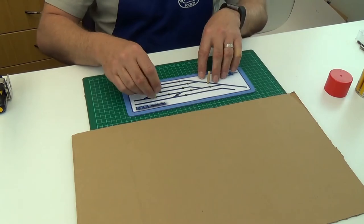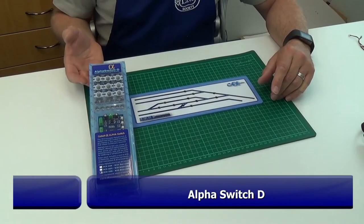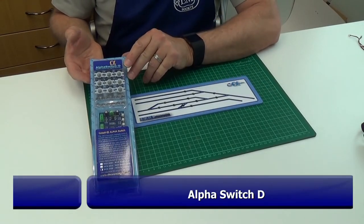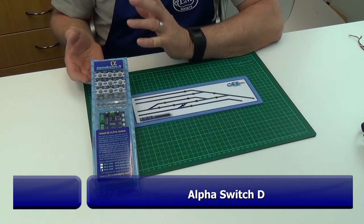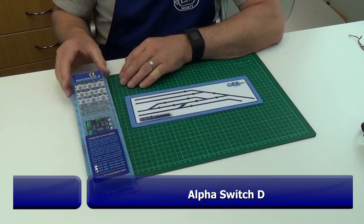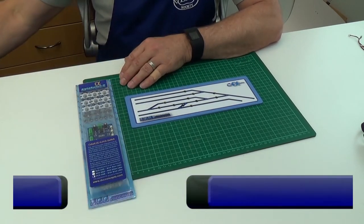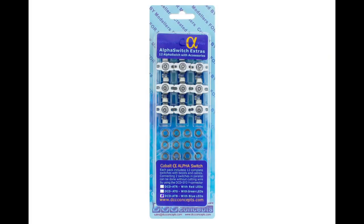The alpha switch D comes with its control board, six pairs of LED switches, bezels and harnesses with a choice of red, green or blue LEDs. Additional switches are available separately.